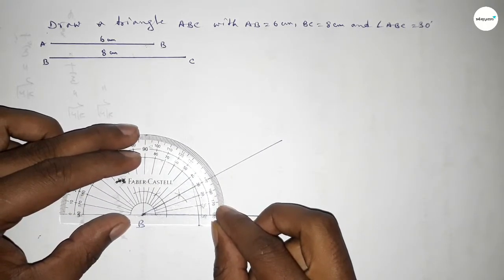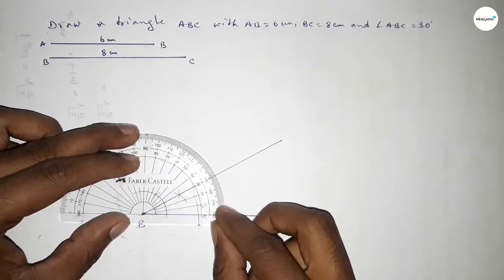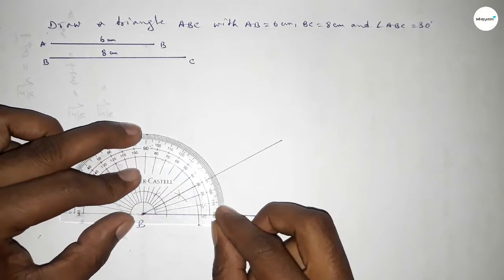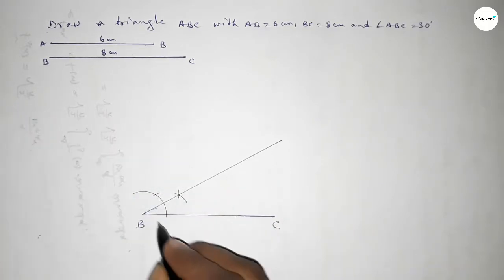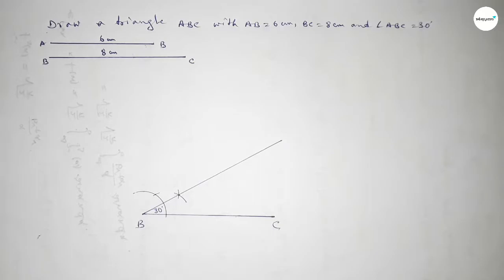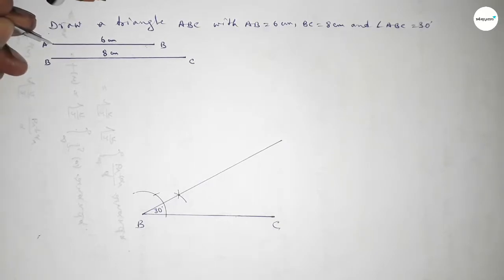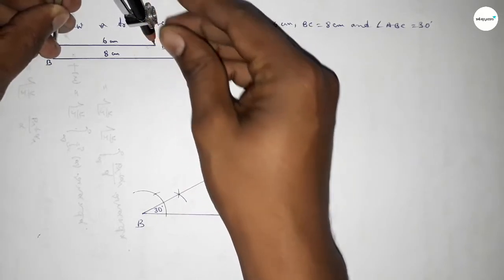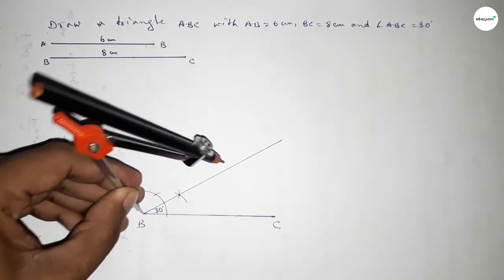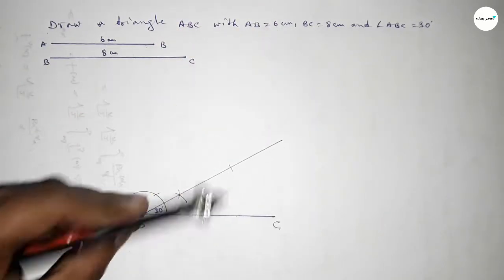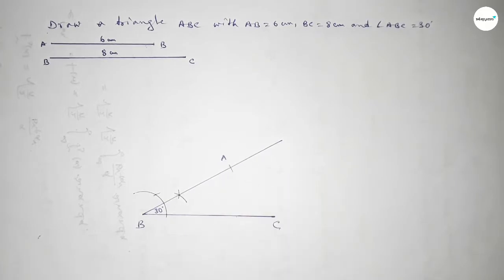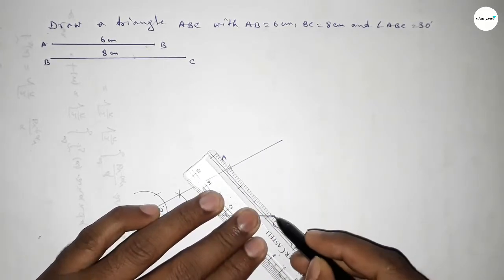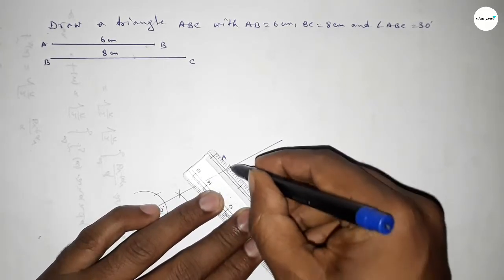Checking whether it is 30 degrees or not — this is perfectly 30 degrees. Now taking the length AB equal to 6 centimeters using the compass, putting the compass on point B and cutting here, taking point A. Now joining A and C to get triangle ABC.